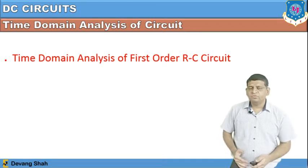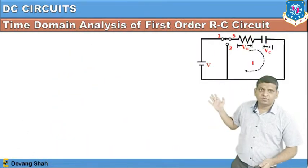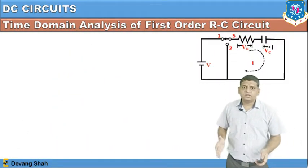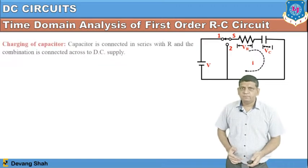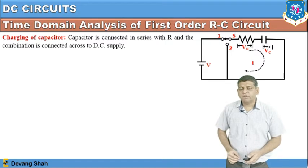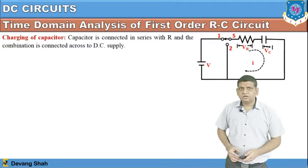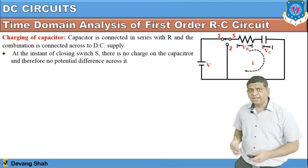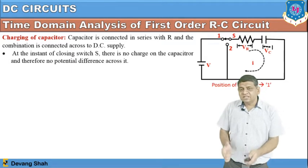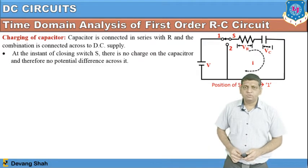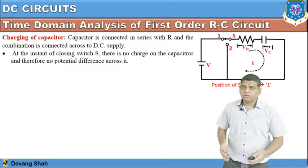In this circuit, two components are connected in series — resistance and capacitor — and a DC voltage source V is applied to the combination of R and C. There is a switch with two positions: position 1 and position 2. The capacitor is connected in series with the resistance, and the combination is connected with the DC supply. At the instant of closing the switch, the series combination is connected with the DC voltage source.